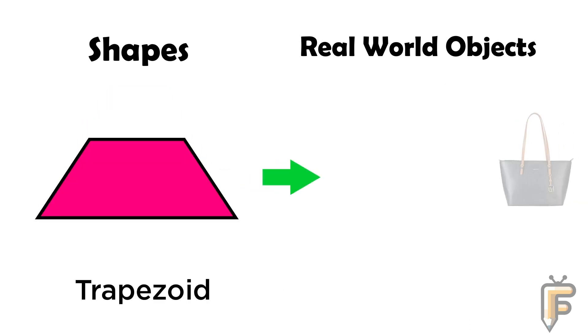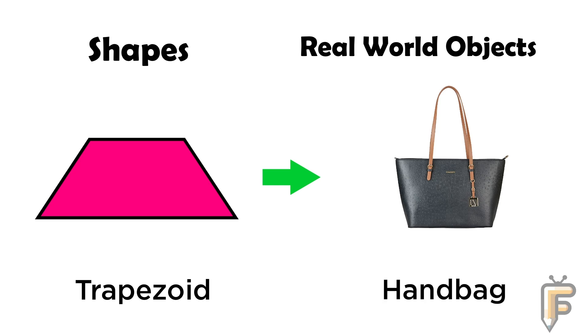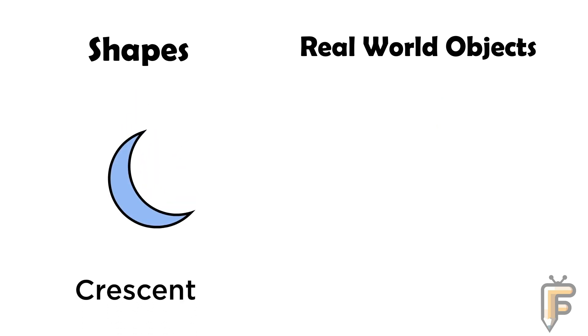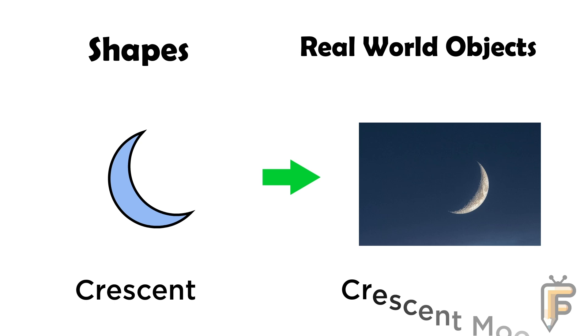Trapezoid: handbag is trapezoid shape. Crescent: crescent moon.